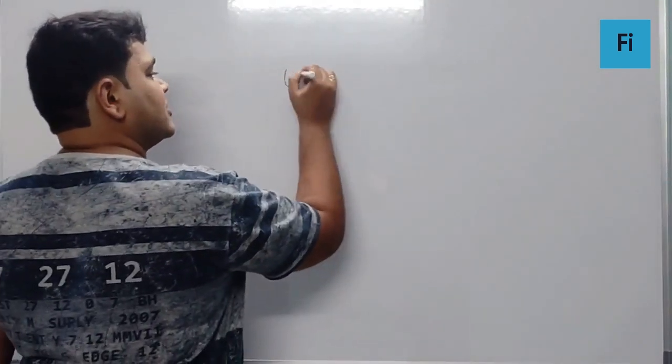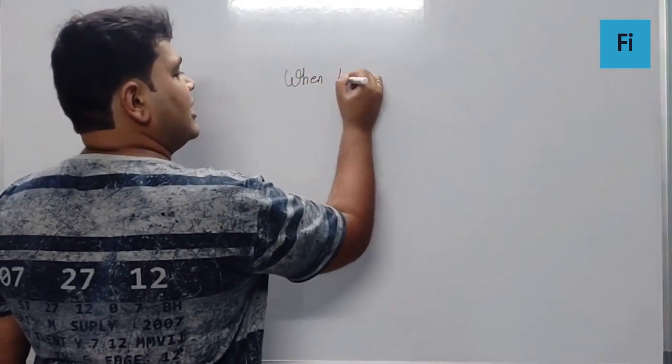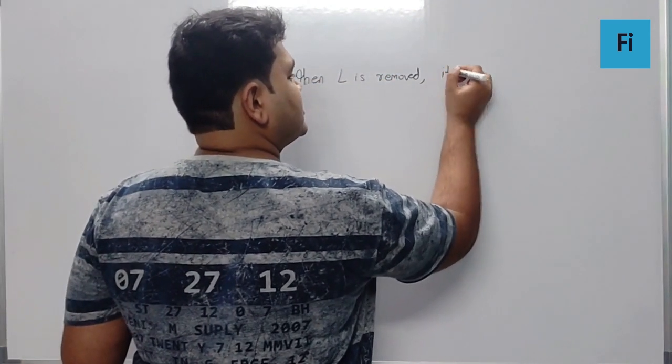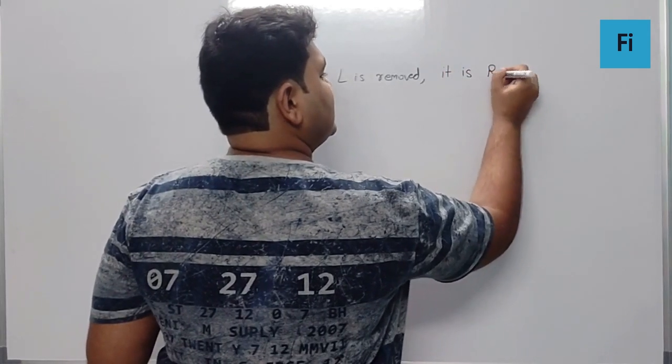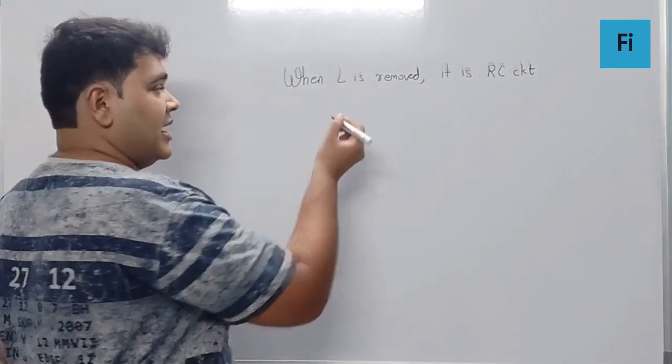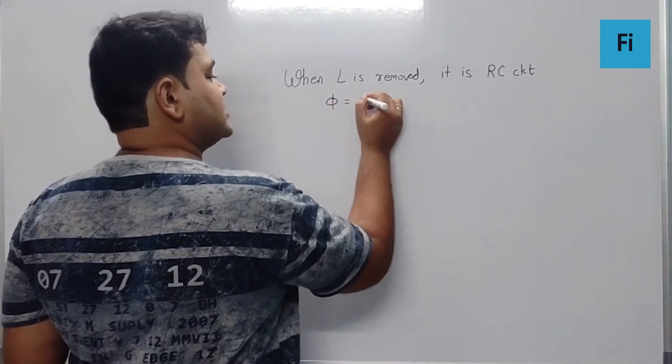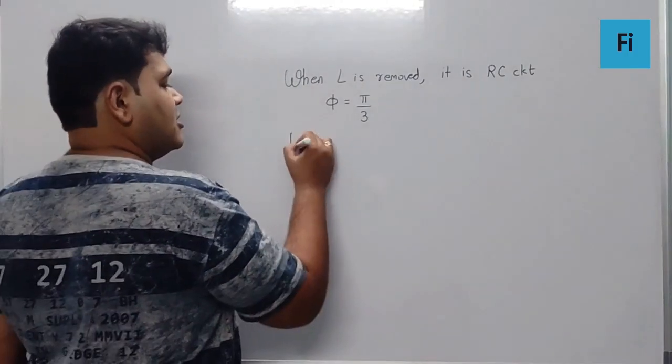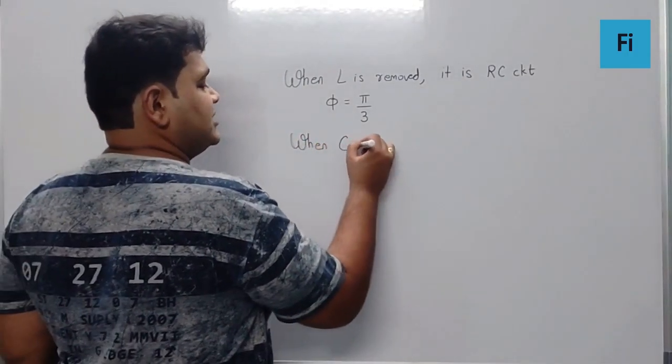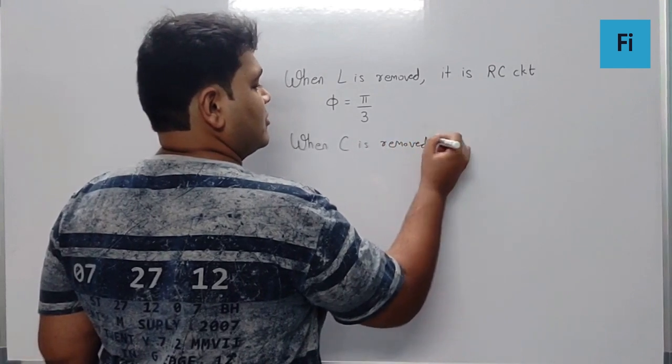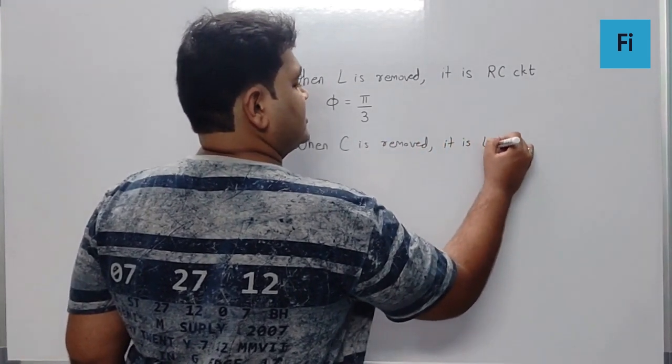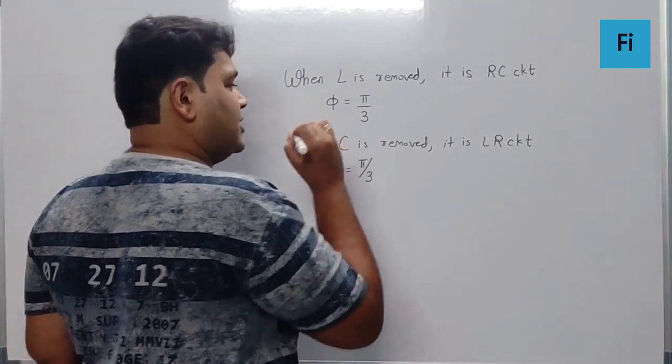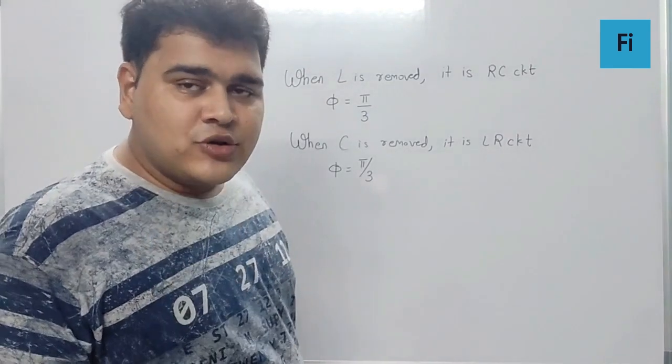Now what you need to understand is when L is removed, it becomes an RC circuit, correct? And here the phase difference is pi by 3. But when C is removed, it is an LR circuit, and still the phase difference is pi by 3.